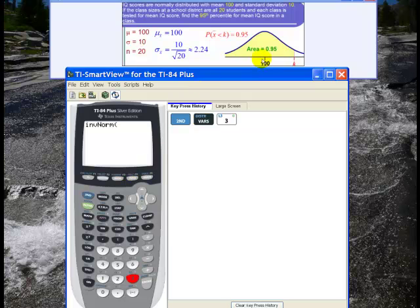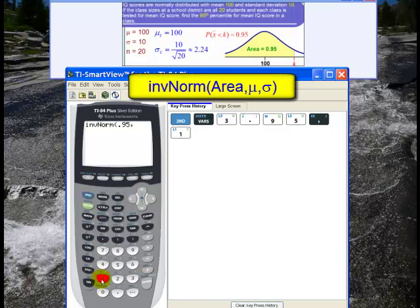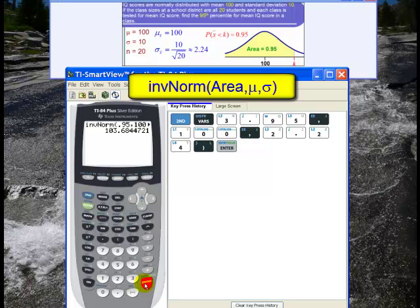And now the syntax is I first put in the area, 0.95, comma, then I put in the mean, 100, comma, and then I put in the standard deviation, 2.24. And I close the parentheses, and I hit enter. So this value K such that the area to the left of K is 0.95 is about 103.68.